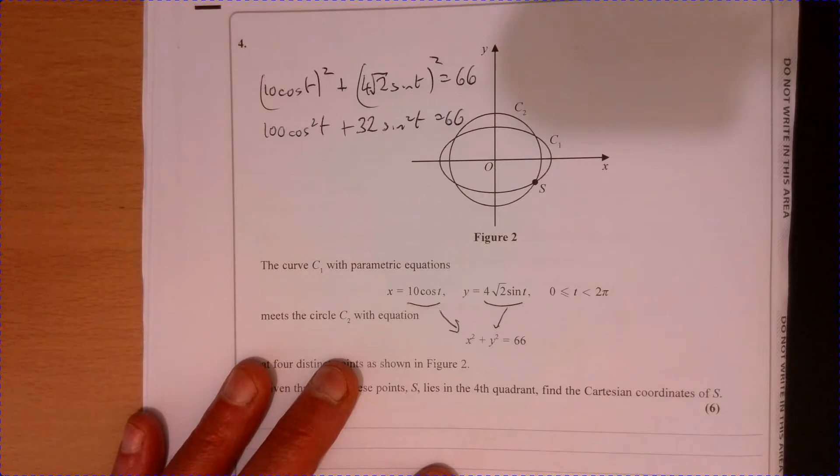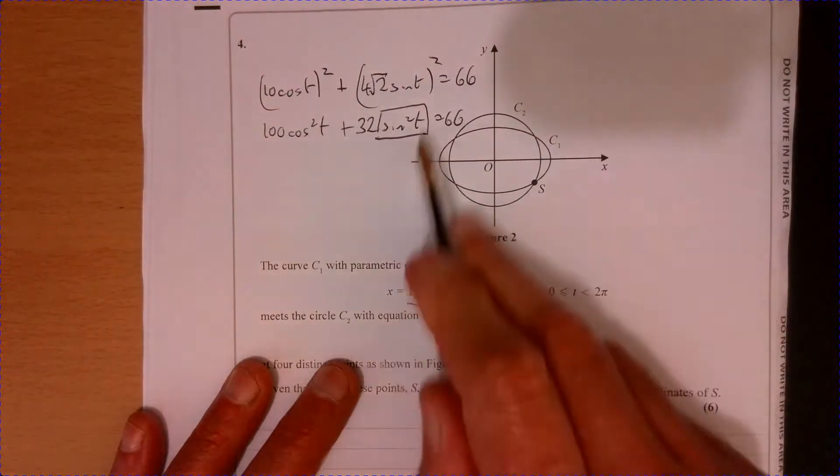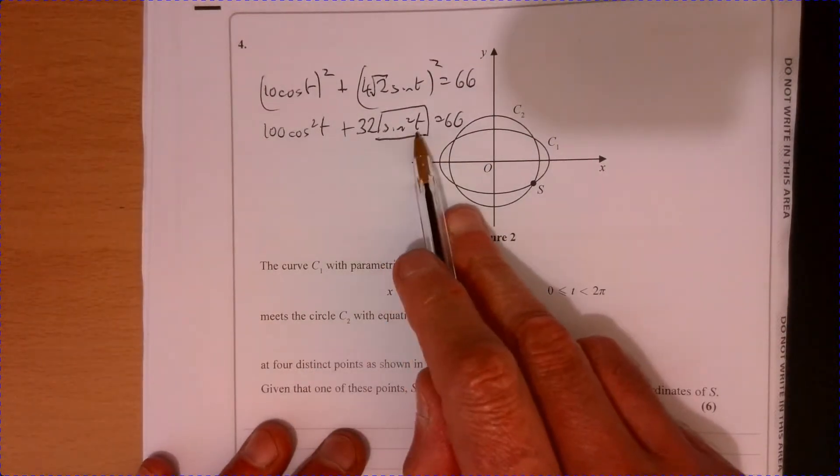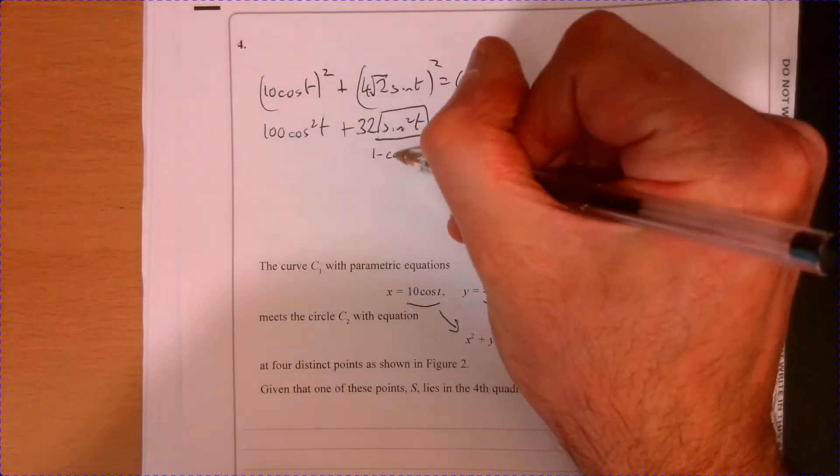Right, okay. Now I want to be able to write something so it's only got cos or only got sine in there. So if I look at this one, I could do this with either one, I suppose. If I look at sine squared T, I should know that that is one minus cos squared T.